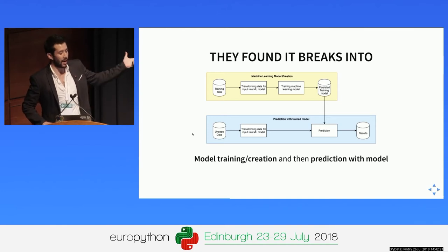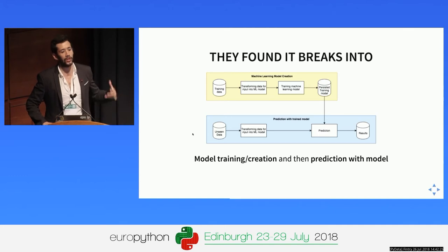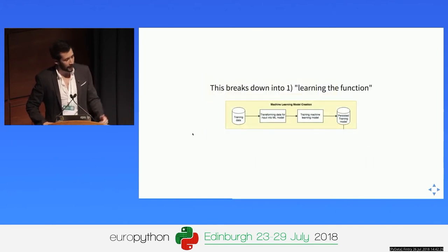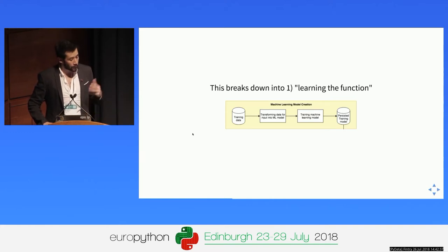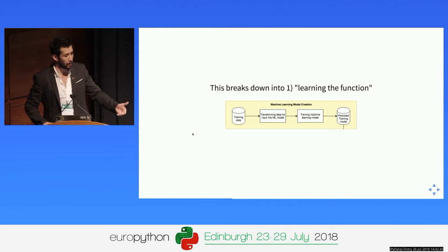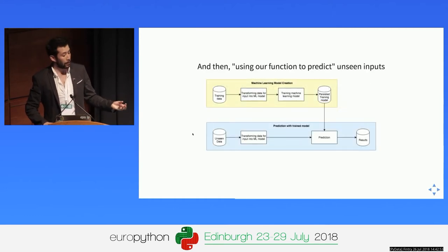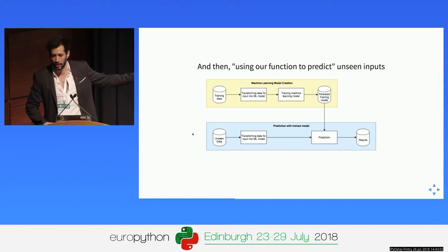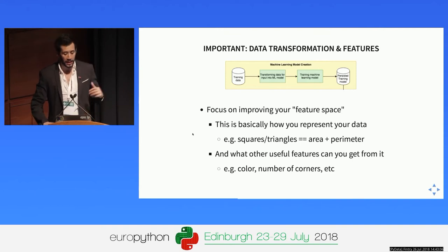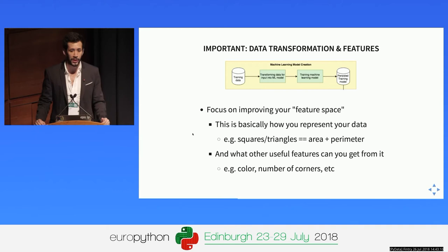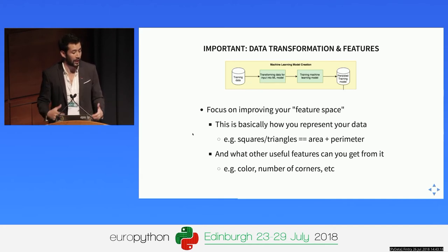The first part — learning the function — breaks down into finding your training data and test data, transforming this data so it can be input into your chosen machine learning model, then actually training the model, and once you're happy, persisting that model. Once you persist the model, you're able to take any unseen data, transform it so it can be represented, run it through your model, obtain a prediction, and get the results. The most important parts of this process are transforming your data into features and training the model itself — you need to focus a lot on your feature space.